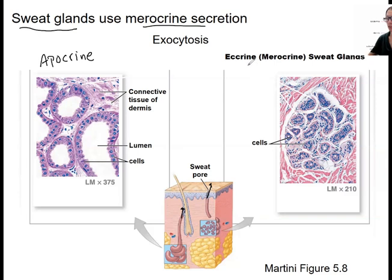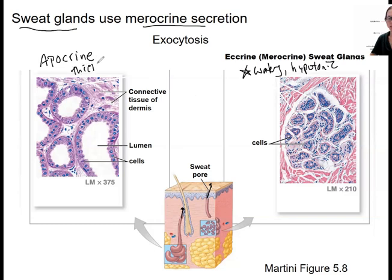This is kind of your typical sweat — watery, hypotonic compared to the blood. Thermoregulation, as well as a little bit of a role in excretion of wastes. Apocrine is the one that's this thick, thicker, sticky stuff. It's actually produced from blood plasma with proteins and fats added in — and it's stinkier.